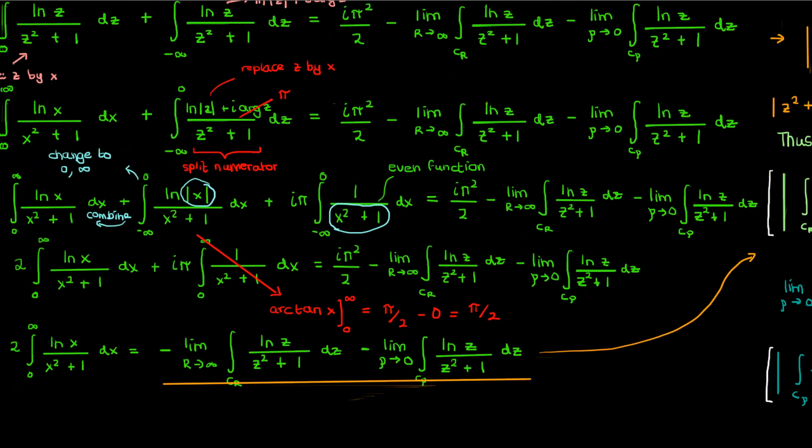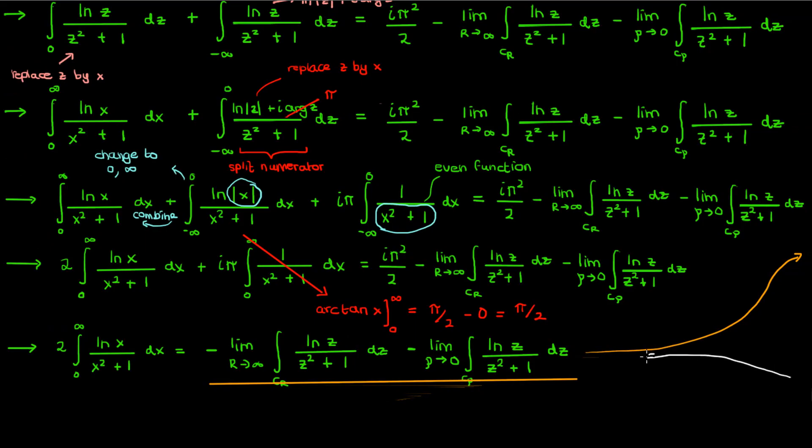Finally, when we plug all this back into the equation for the integral we ultimately want, we find that since both of our integrals on the right are 0 as we take the limits, the integral from 0 to infinity of ln x over x squared plus 1 is 0. All that worked for nothing. But the result doesn't matter, it's the journey that really counts, and in this journey we learn how to integrate complex logs using branch cuts.